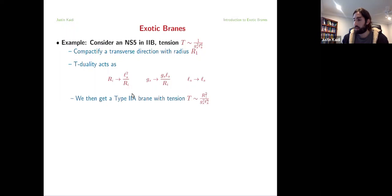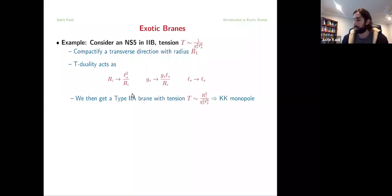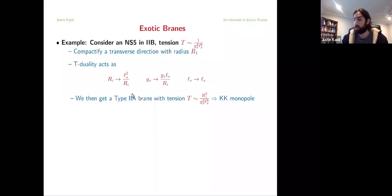Upon T-dualizing, what I end up with is an object in type IIa whose tension goes as shown here. I've just naively applied these transformations to the formula for the tension. So, I can ask the audience: what is this object? Since the audience is muted, I'll just answer on their behalf. This is a KK monopole. It's something slightly exotic, but still within the realm of things most string theorists would be familiar with. The thing which is slightly exotic about it is that the KK monopole cannot be interpreted as just taking some standard higher-dimensional brane and wrapping it on a circle — you can see this by the R-squared behavior in the tension. If I were to simply take a brane and wrap it on a circle, I would get R-behavior, not R-squared. So, this KK monopole is sort of intrinsically its own object.